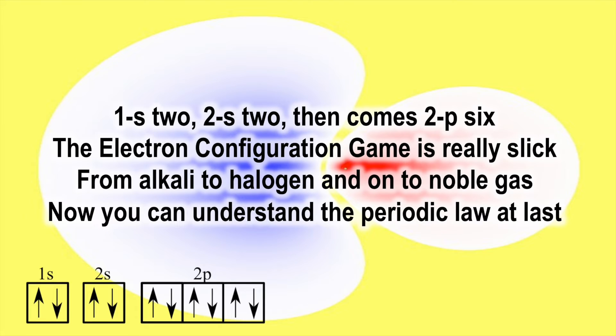Oh, 1s two, 2s two, then comes 2p six. The electron configuration game is really slick. From alkali to halogen and on to noble gas, now you can understand the periodic law at last.